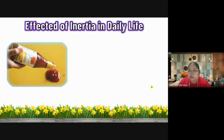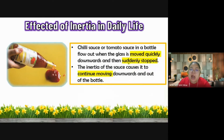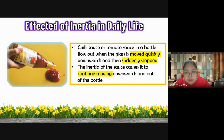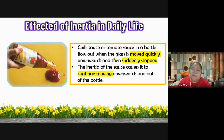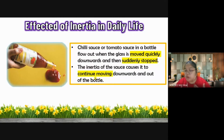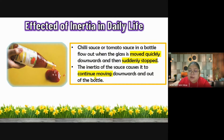Another example: chili sauce. To pour chili sauce from a bottle, you bend the bottle downward and shake it quickly, then suddenly stop. When you stop, the sauce continues to flow upward because of inertia - the sauce cannot stop immediately with the bottle. The sauce was moving downward with the bottle, so it cannot stop immediately and continues moving, causing it to flow upward and come out of the bottle. This is the inertia of the chili sauce.